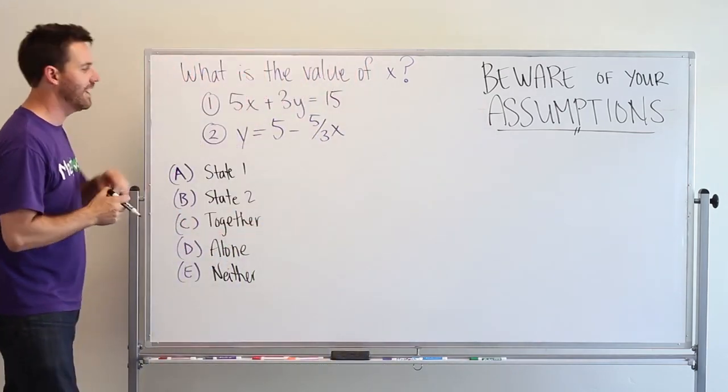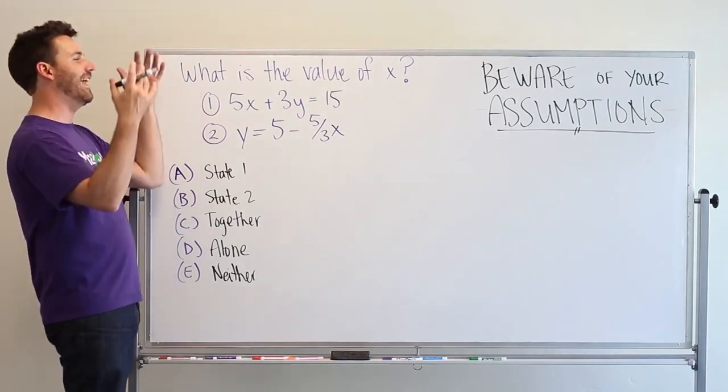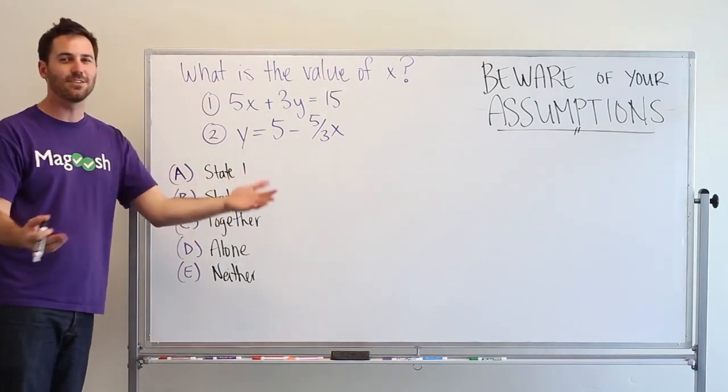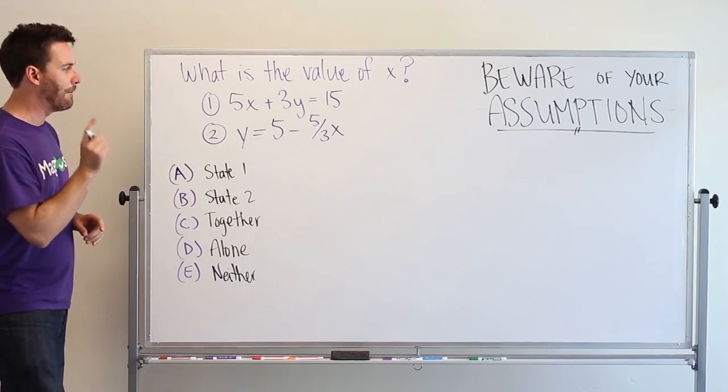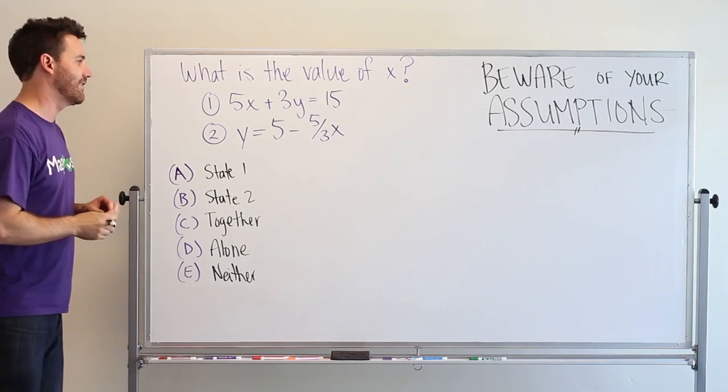You're making too many assumptions. Yes, you have two variables and yes you have two linear equations, and usually yes, that means you can figure out what the value of one of those variables are. But let's work this problem and see why that's not true.